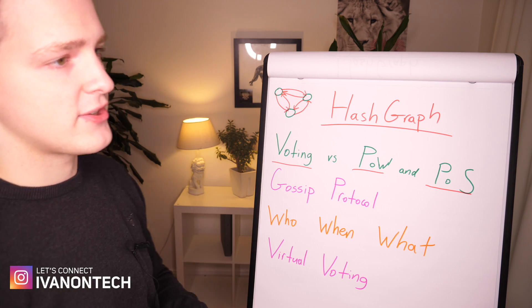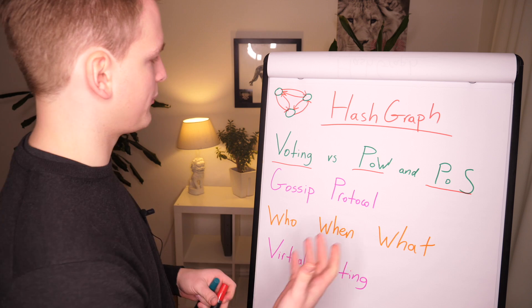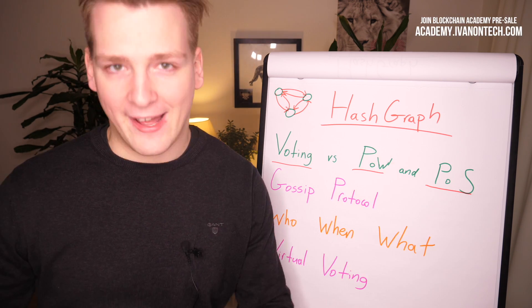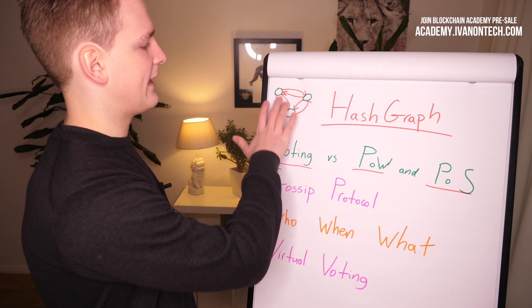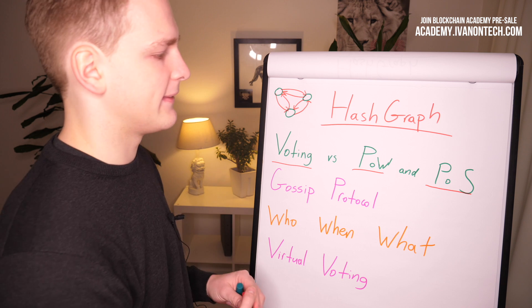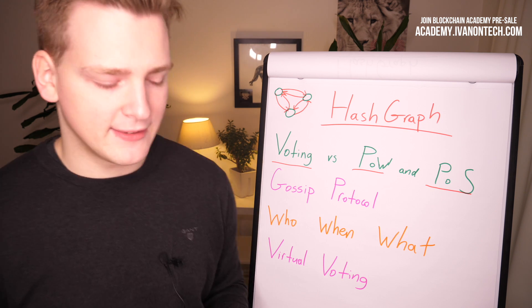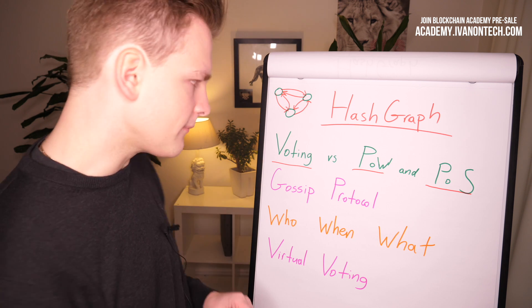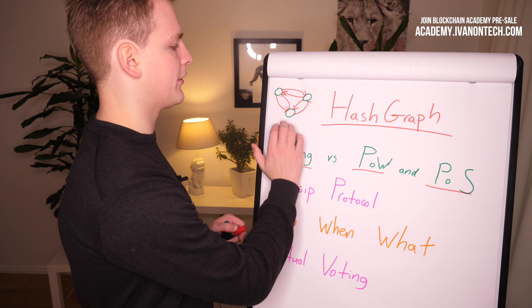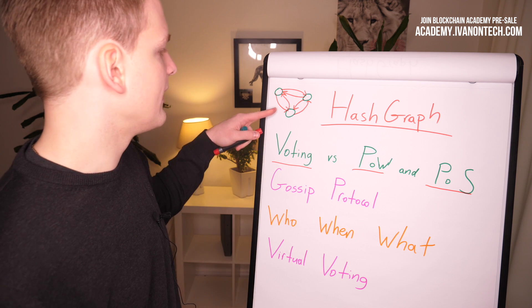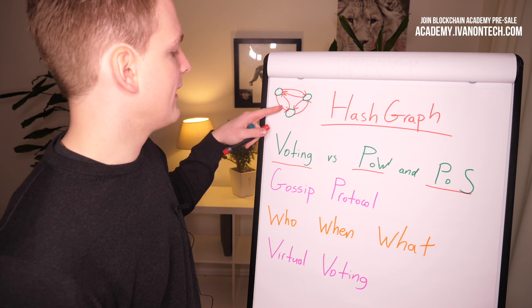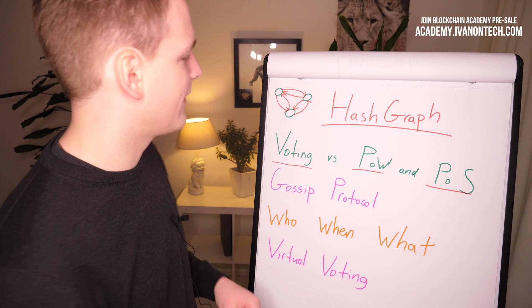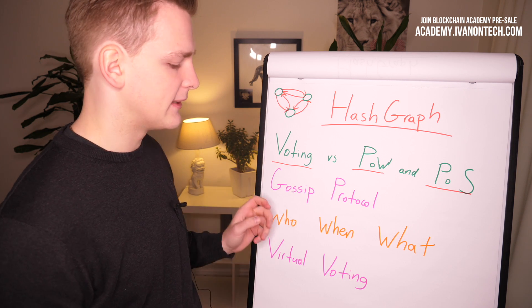With a voting algorithm, transactions are handled asynchronously — as soon as there's a transaction, it doesn't have to wait for other transactions to be batched together. However, the issue is bandwidth. If I have to tell each and every other node what I think, and do that for every transaction, it quickly becomes unviable — too heavy on the bandwidth. So voting algorithms are very good in theory: secure and fast, but in practice impossible due to the sheer number of messages required.